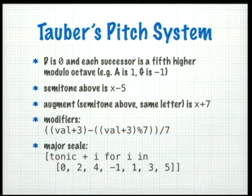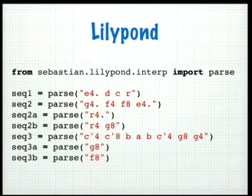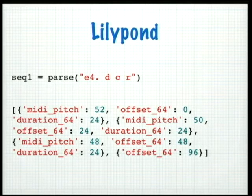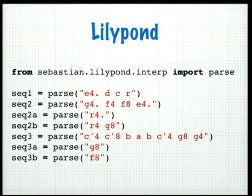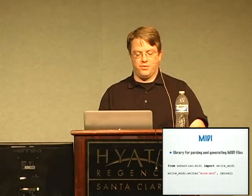Sebastian includes a very simple Lilypond parser that can take compact Lilypond-style instructions and convert them to the internal dictionary representation. That's actually how the various sequences used in Three Blind Mice were defined. Sebastian also includes a library for both parsing and generating MIDI files. Once you've built your musical objects with a duration, a MIDI pitch, and an offset, you can pass them to write_midi and output them as a MIDI file.